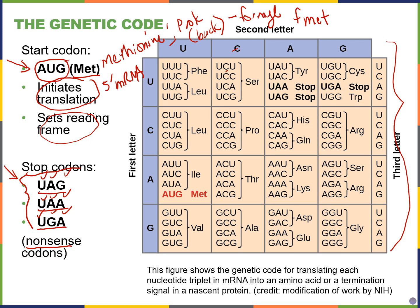If I gave you this chart on an exam, I might blank out some codons and ask you to fill them in and explain what they mean. Using the axes, that's fairly straightforward — you just need to memorize which codon is the start, which amino acid it encodes (methionine), and that UAG, UAA, and UGA are the three stop codons.